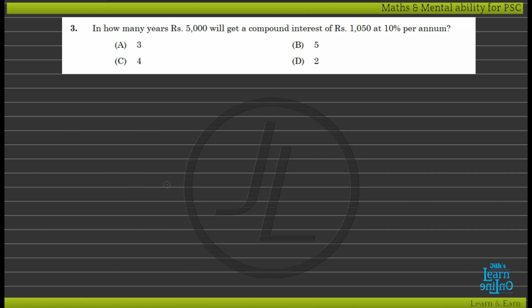If we study these equations, the principal is 5000 with a 10% compound interest rate. The compound interest accumulates each year.